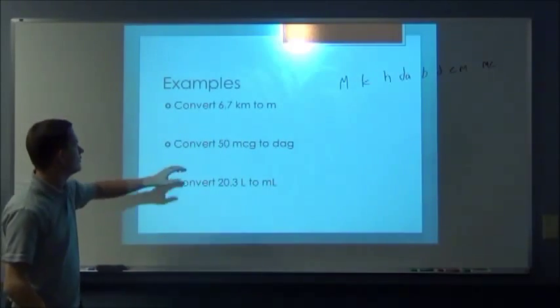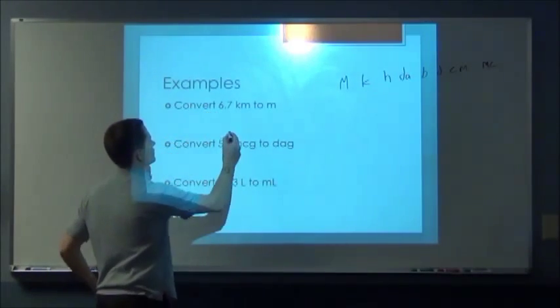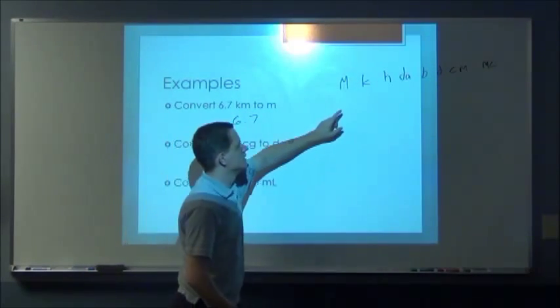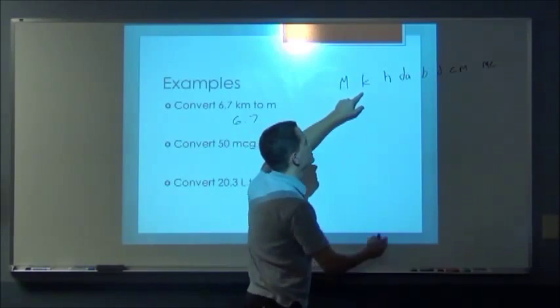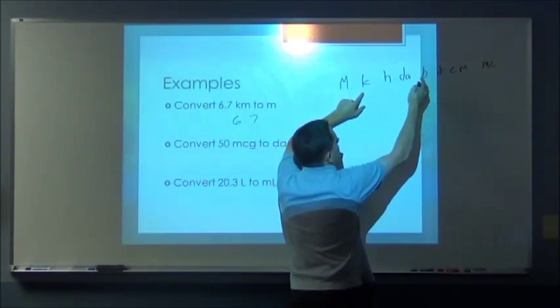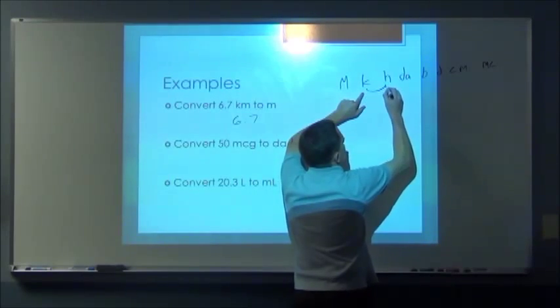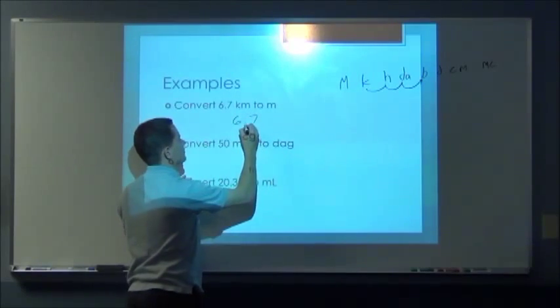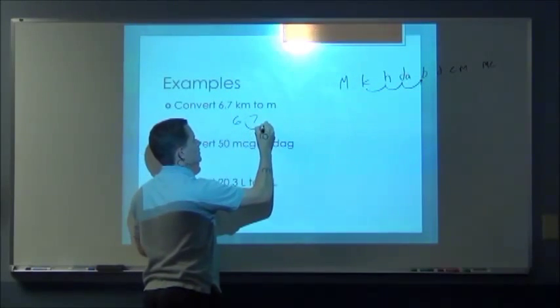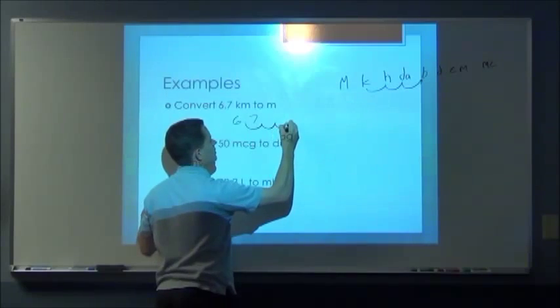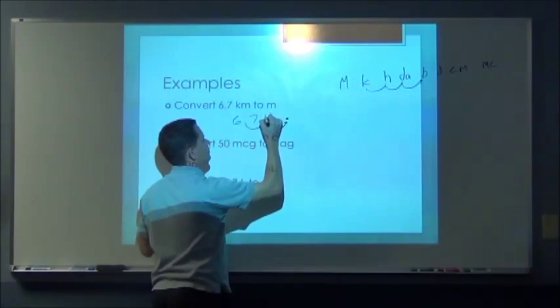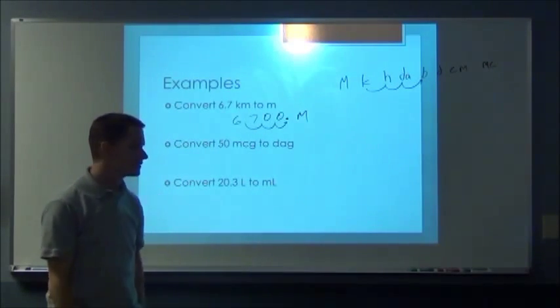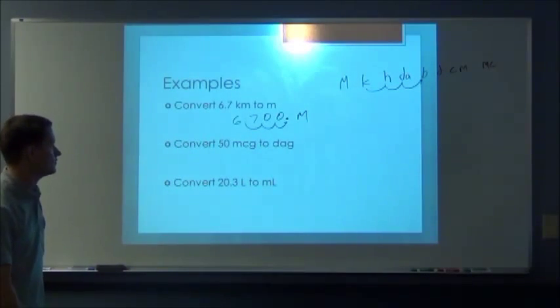And so let's say that you have 6.7 kilometers, you're at kilometers and you want to convert it to meters. Meters is the base or the unit so it would be three places, and so you adjust it and you just move the decimal place. So 1, 2, 3, decimal place would be right there and so your final answer is 6,700 meters.